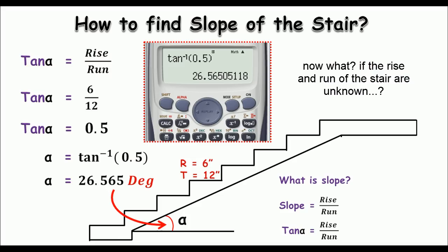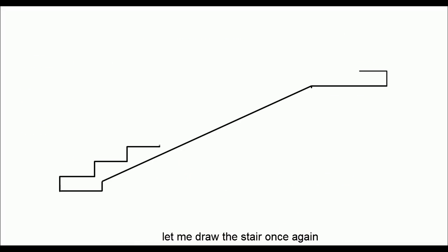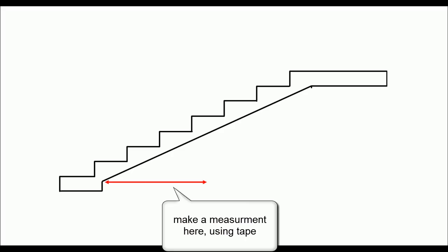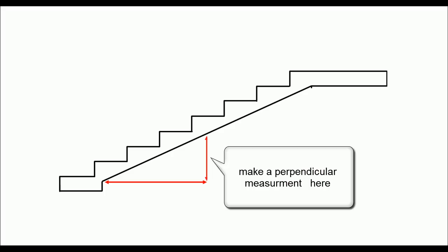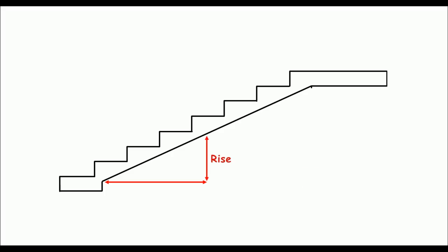Now what if the rise and run of the stair are unknown? Then of course you can do just a few measurements. Let me just draw the stair once again. So you can measure a horizontal distance from the toe or from the pitch of the stair, just like in this form, and then the perpendicular distance up to the west from the horizontal line.